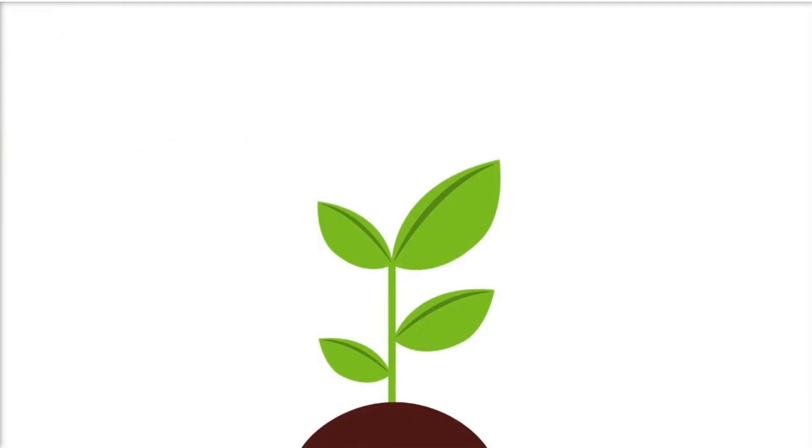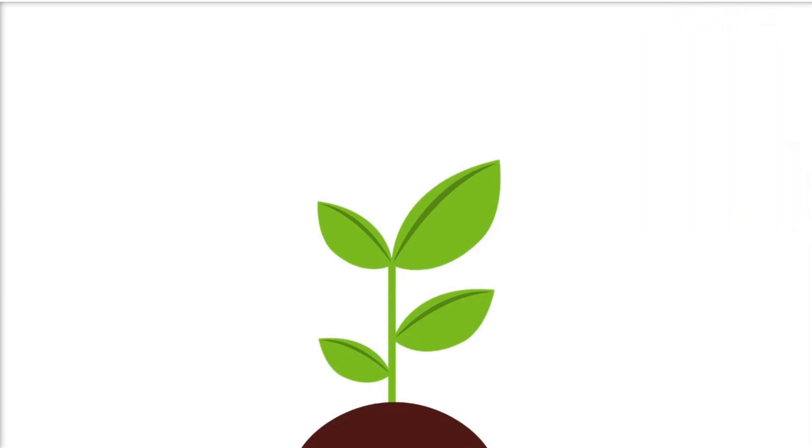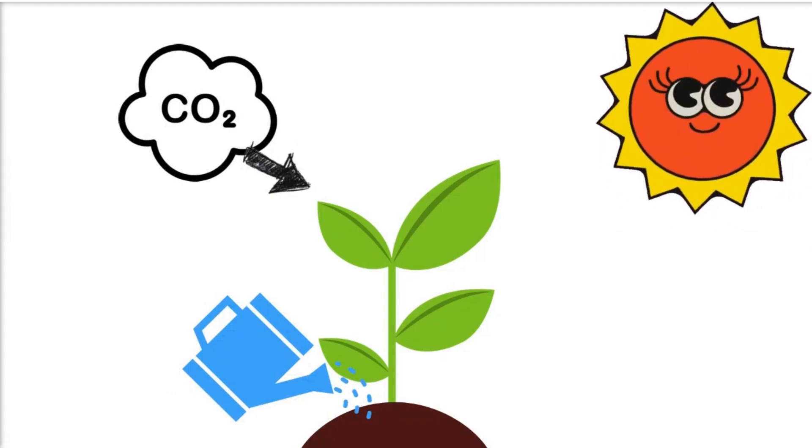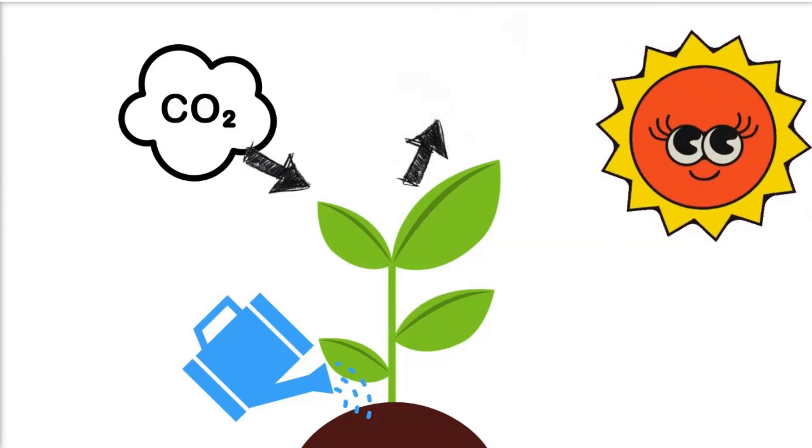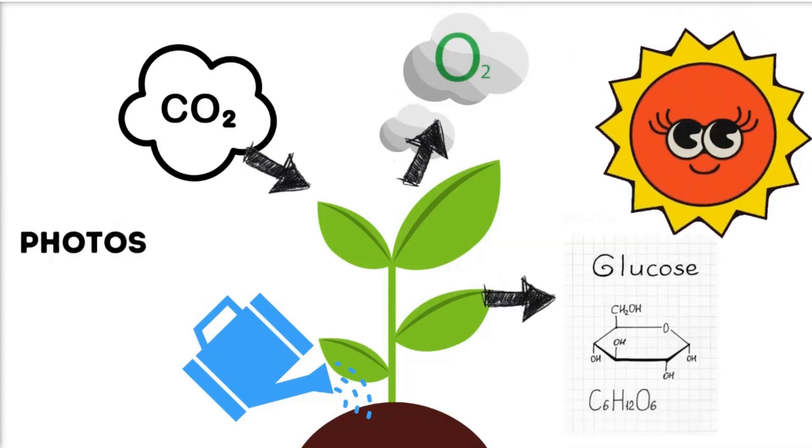For the growing plant to continue its healthy growth and development, it needs the following: sunlight, water, and carbon dioxide. The plant releases oxygen in the air and also stores glucose for its energy. This is photosynthesis.